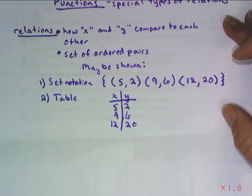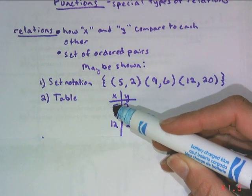You can also do a table. We know how to do a table. So x's go in the first column, y's go in the second.